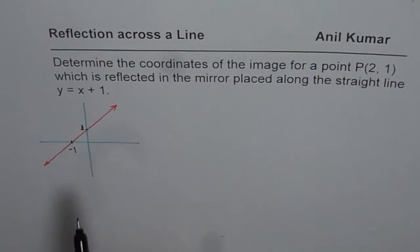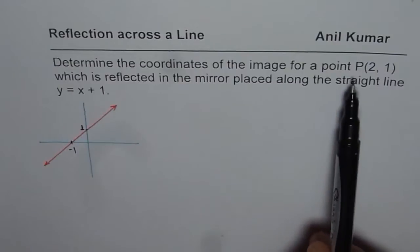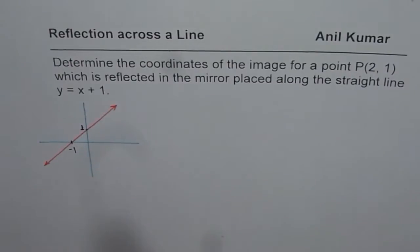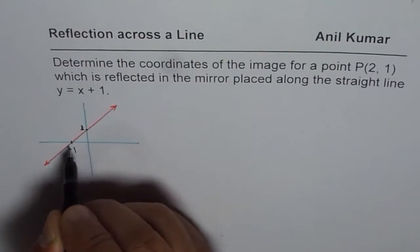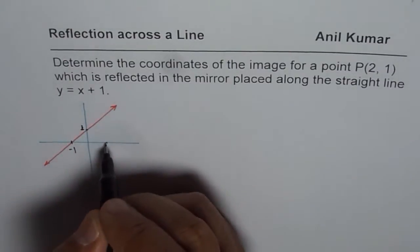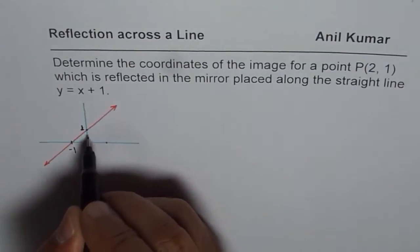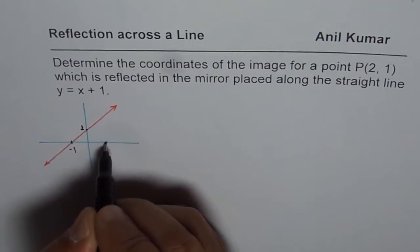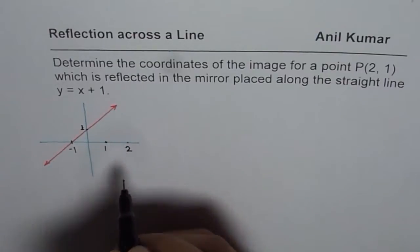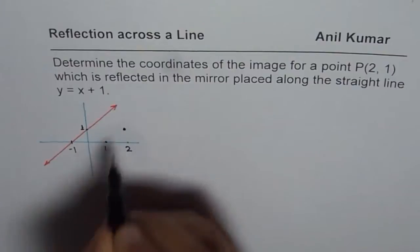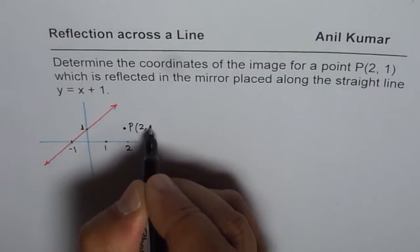So that's the given line. Now we need to determine the coordinates of the image for a point P which is (2, 1). So 2, 1 will be — this is 1, then 2; this is minus 1, this is plus 1, and this is 2. The point P at (2, 1) will be somewhere here. That is the point P for us, which is (2, 1).